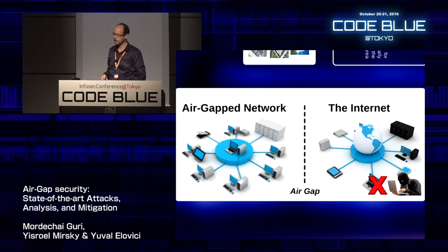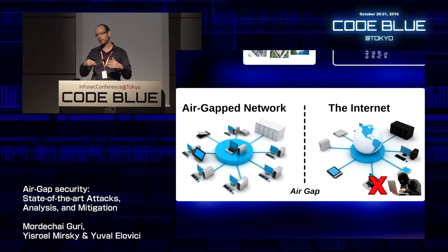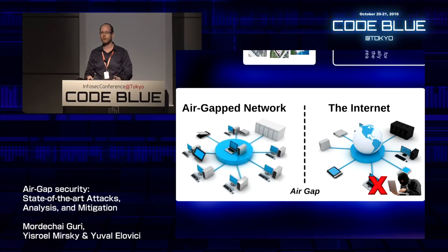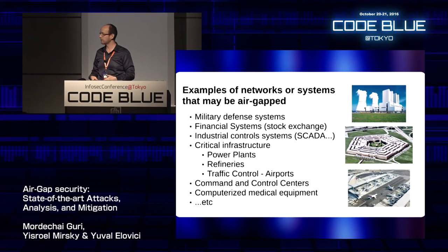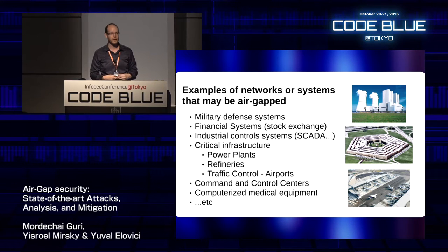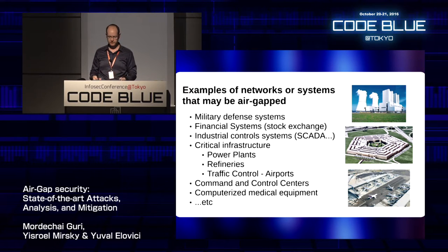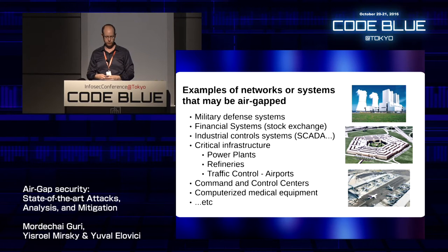An Air Gap Network is some sort of installation with no physical connection — no Wi-Fi, no Ethernet — so the attacker can't communicate with or attack the network. Examples of Air Gap networks include military defense systems, financial systems such as the stock exchange, industrial control systems, critical infrastructure, power plants, refineries, air traffic control, command control centers, computerized medical equipment, and so on.